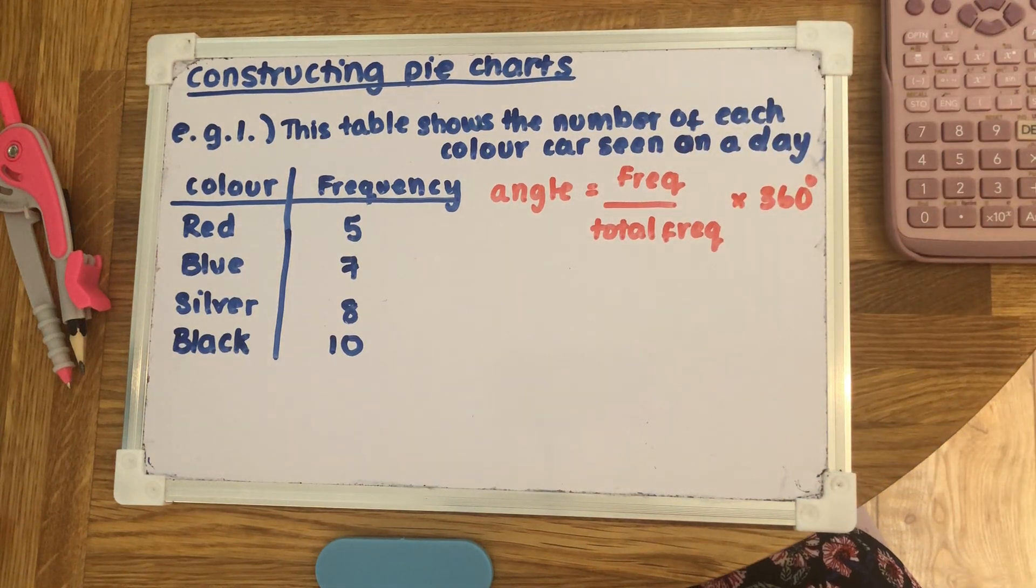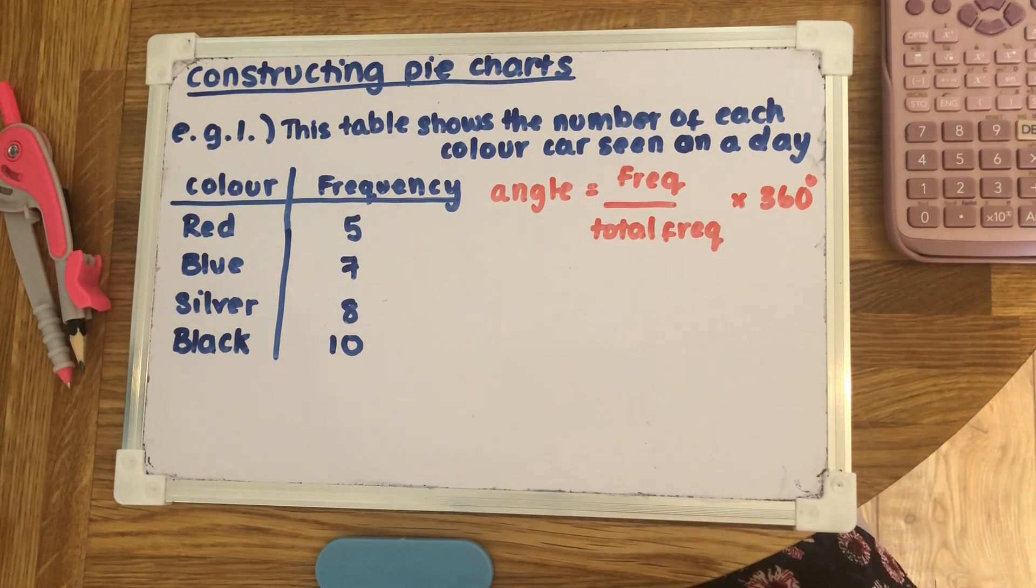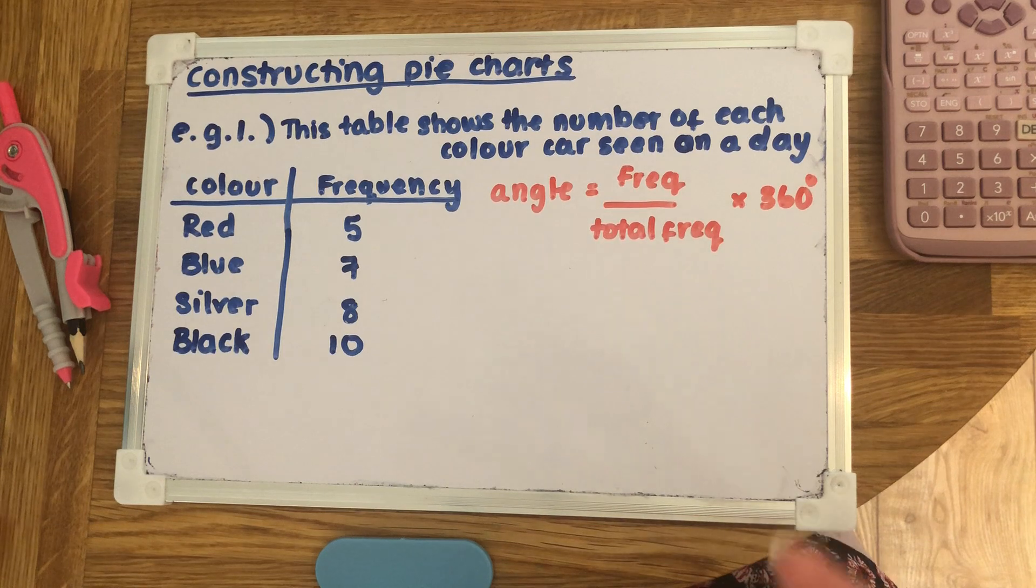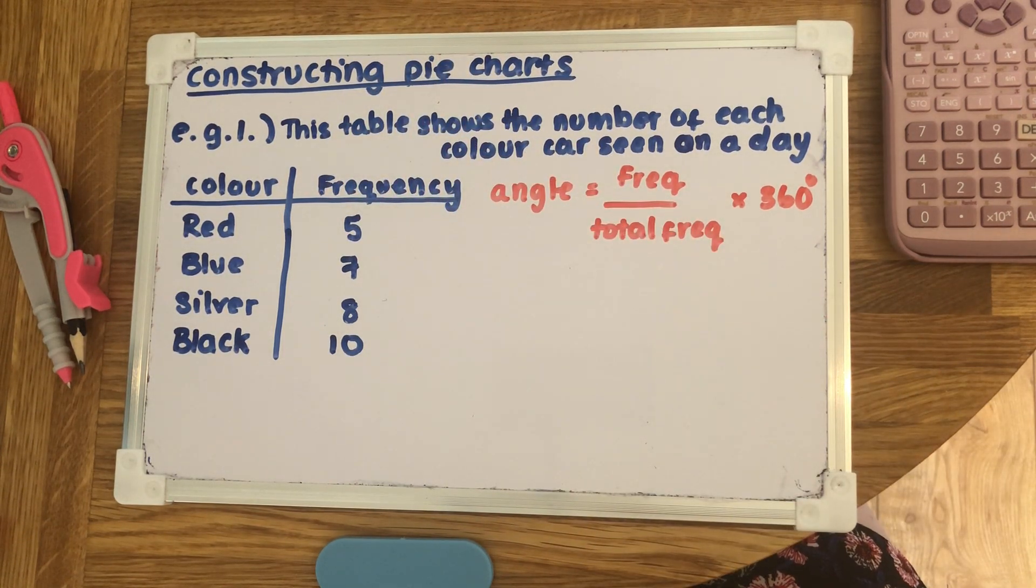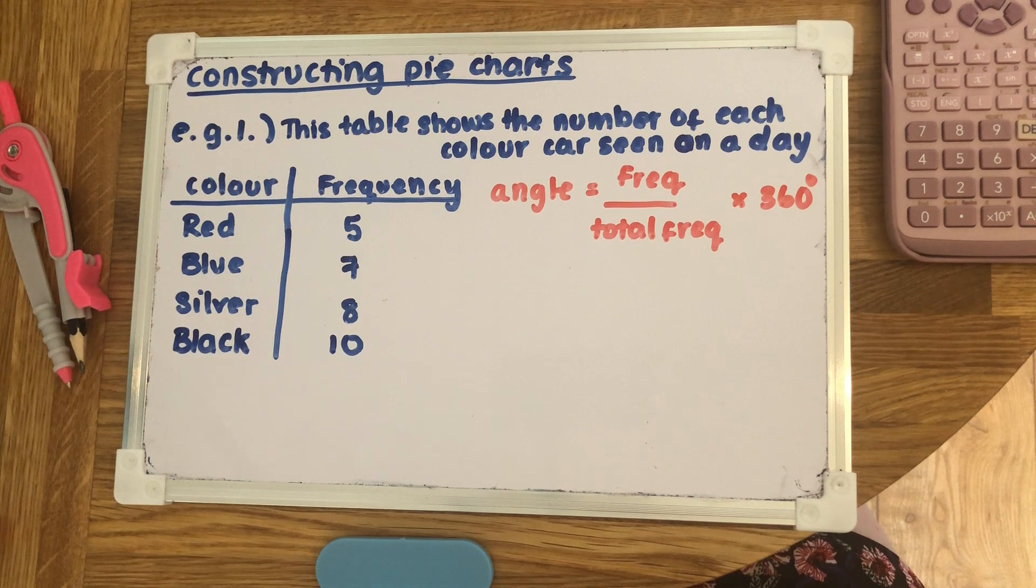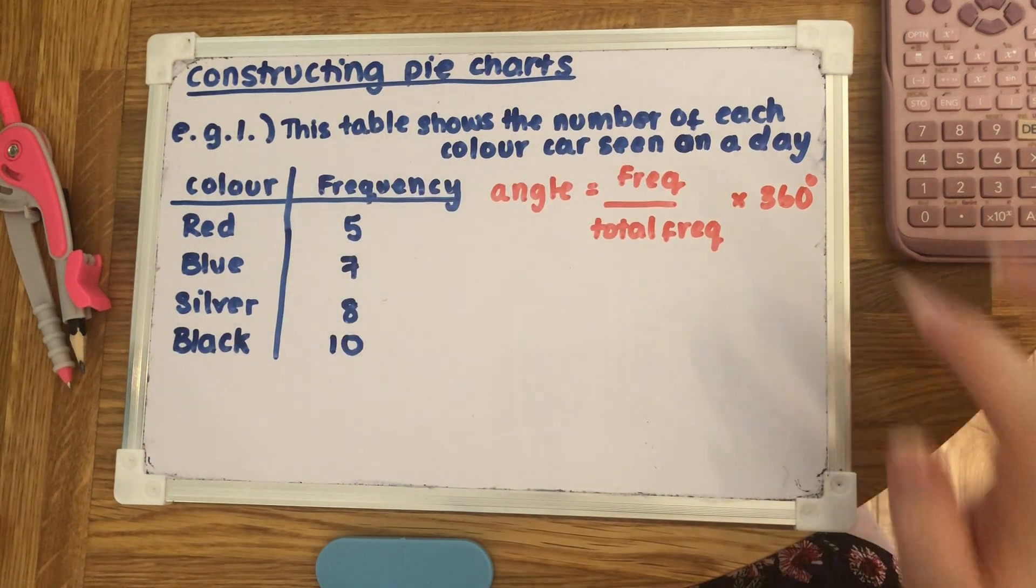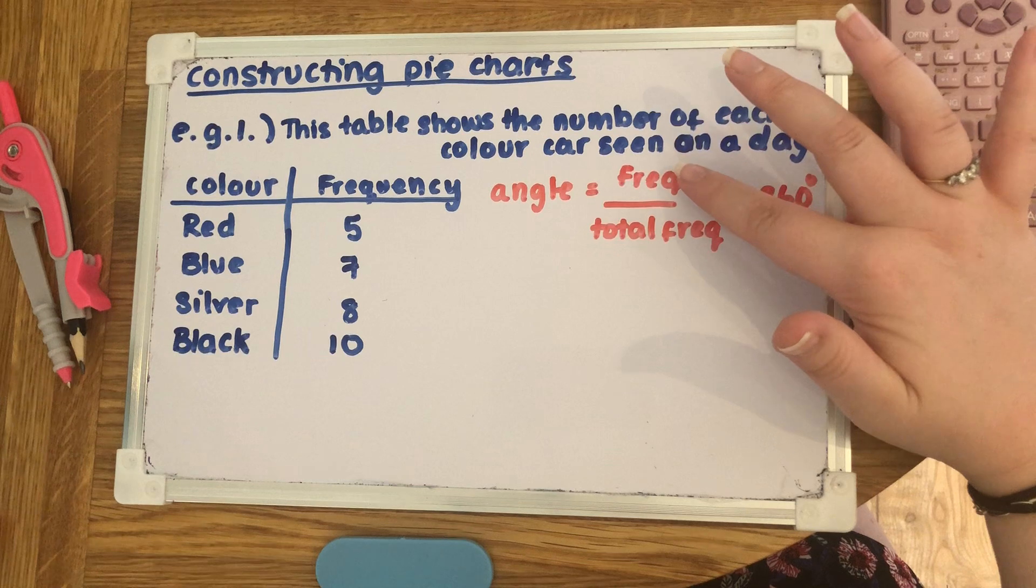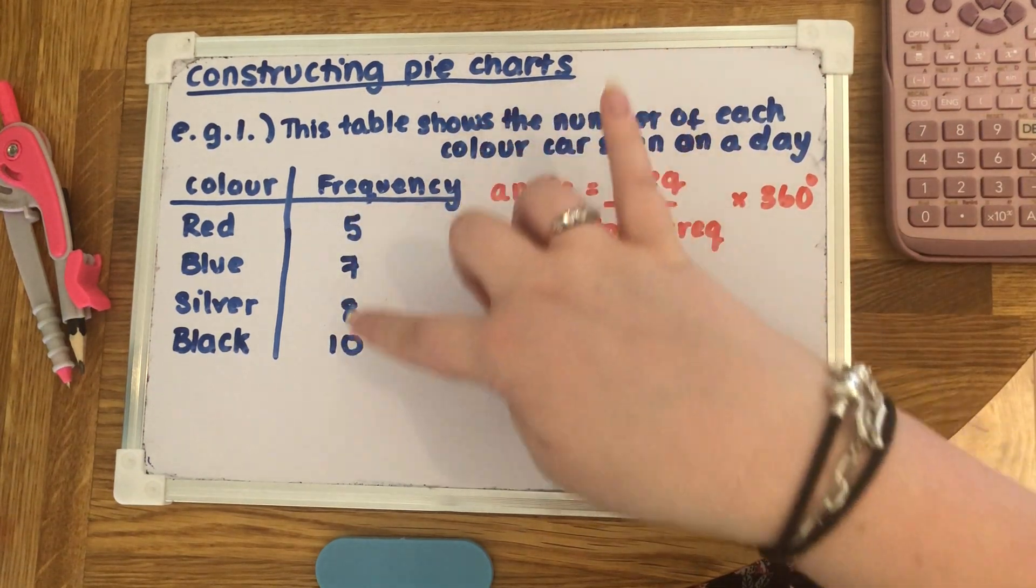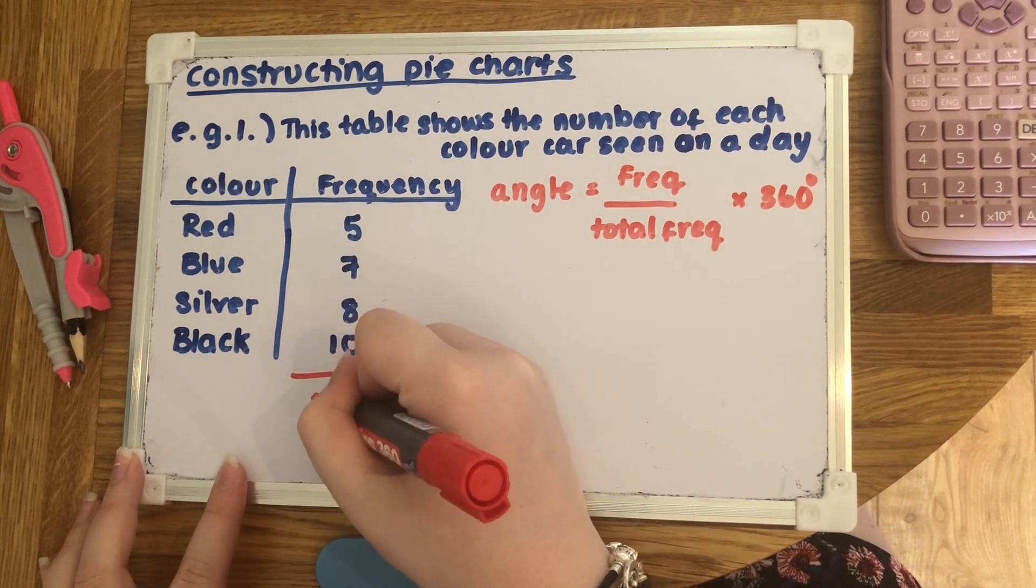For example, this table shows the number of each color of car that's been seen in one day. These are the colors and this is called the frequency, so frequency is just how many they saw: five red, seven blue, eight silver and ten black. This bit in red is the formula I'm going to use to work out how big the angle is going to be on my pie chart. We've got the frequency divided by the total frequency, so if you add all those up you would get 30, so there was 30 cars in total.